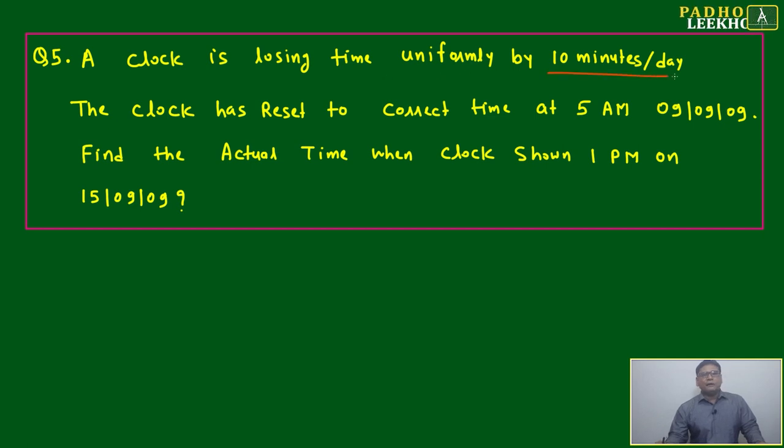A clock is losing time uniformly by 10 minutes a day. I'm asking you, can any mechanical system be uniform? If we're talking about any vehicle - your car, truck, bus - as an example, if you have a good scientific or logical mind, you'll understand. Can any vehicle run at constant velocity? No. Only in laboratory conditions, but questions will come based on constant velocity.